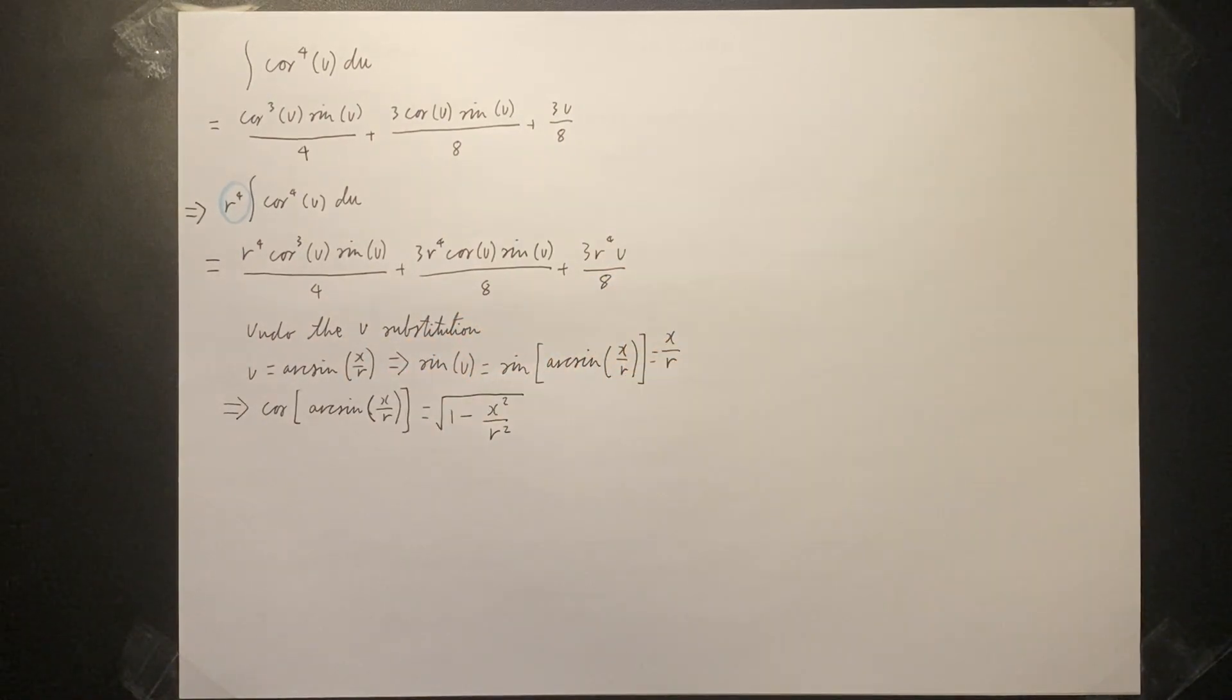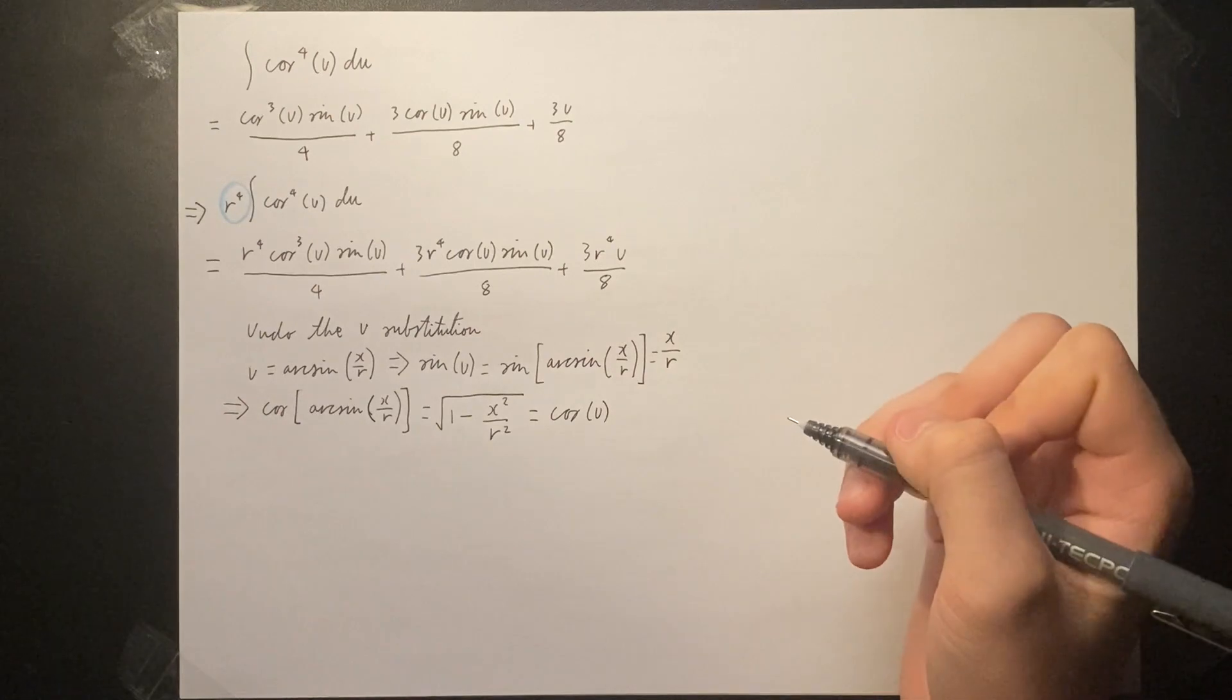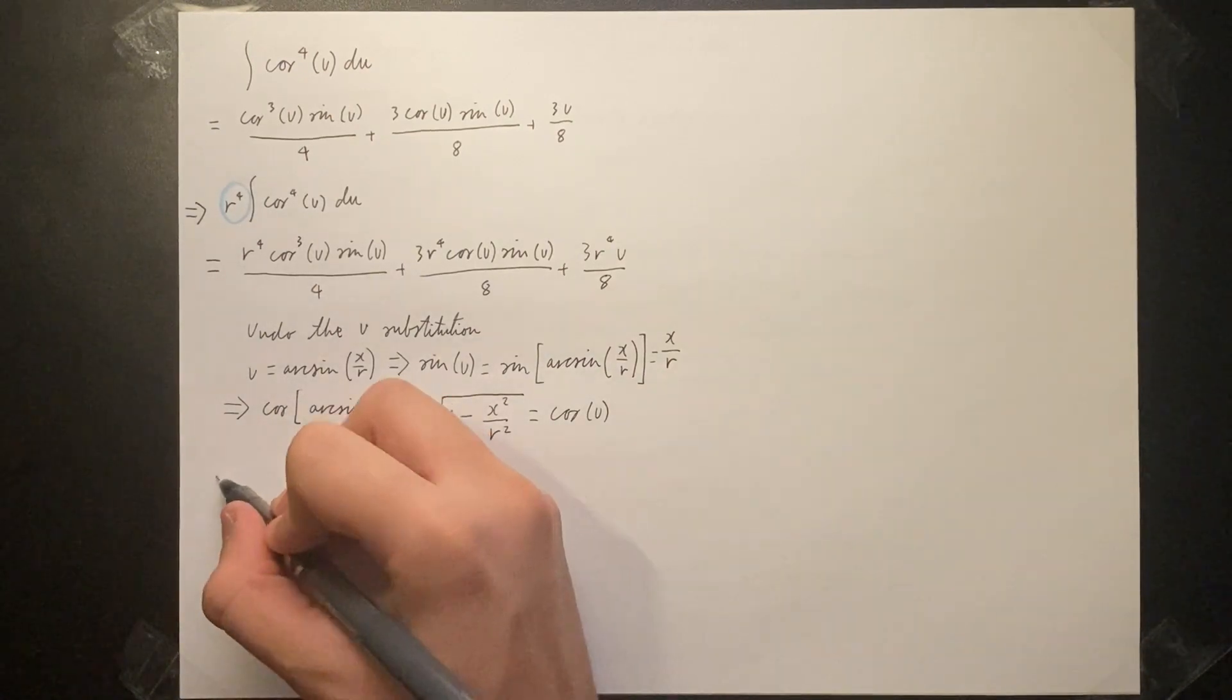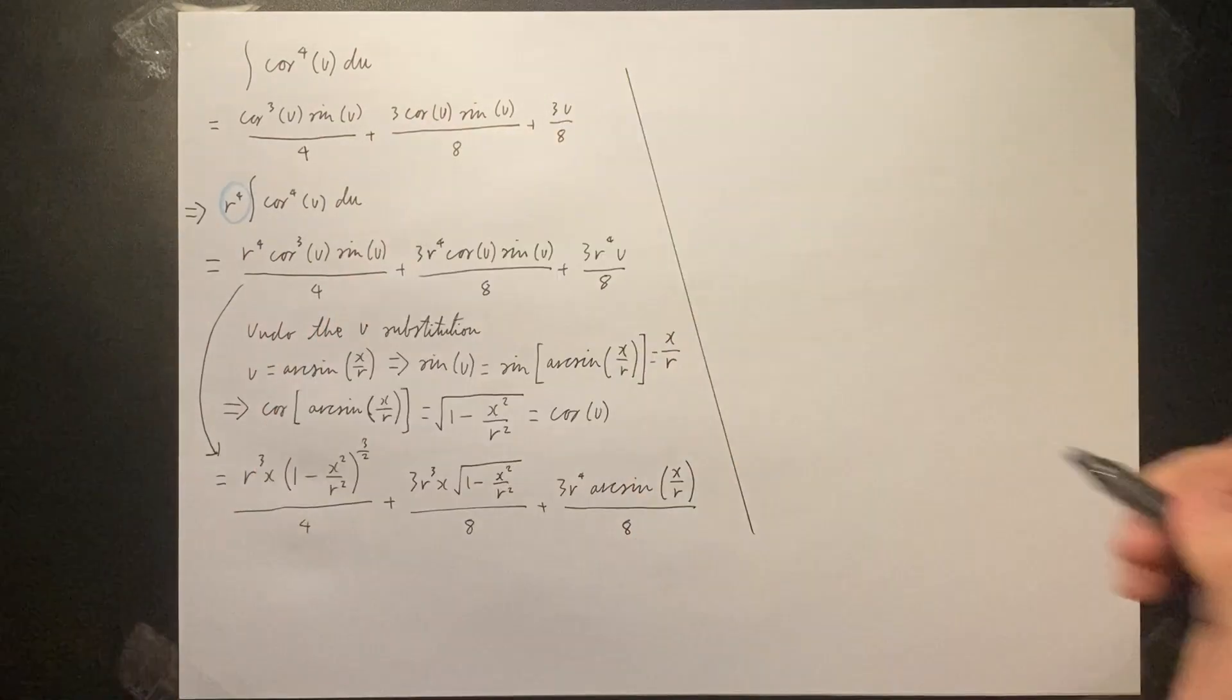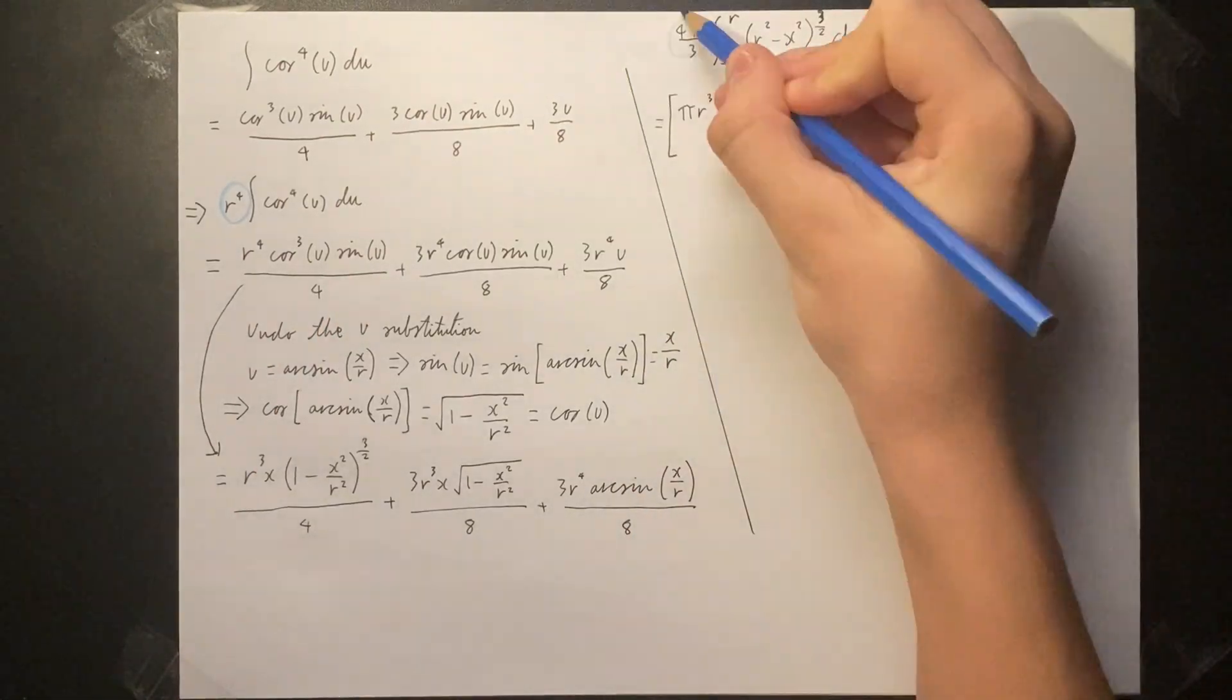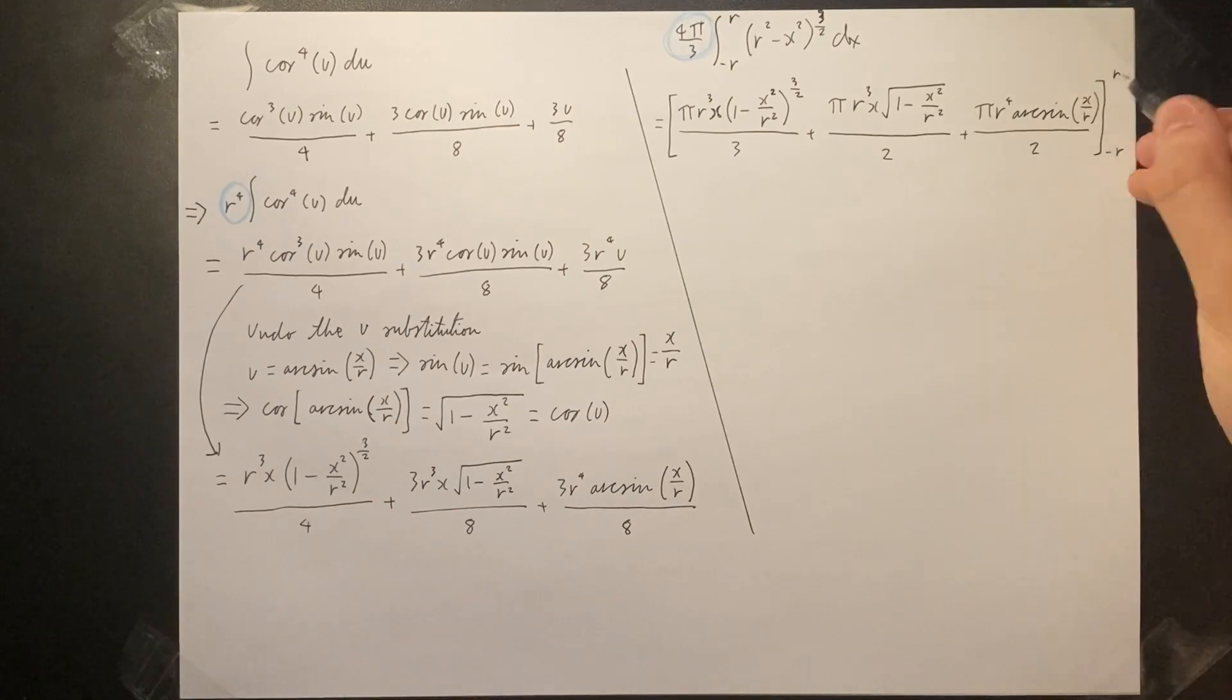Note that the cosine of arc sine has its own identity. Thus, by resubstituting we obtain the following equation. We can't forget about the four-thirds pi constant that needs to be multiplied back in. And we can bound the solved integral from negative r to r.